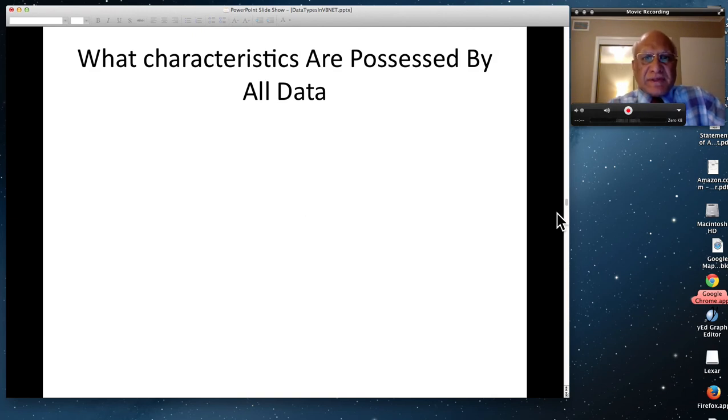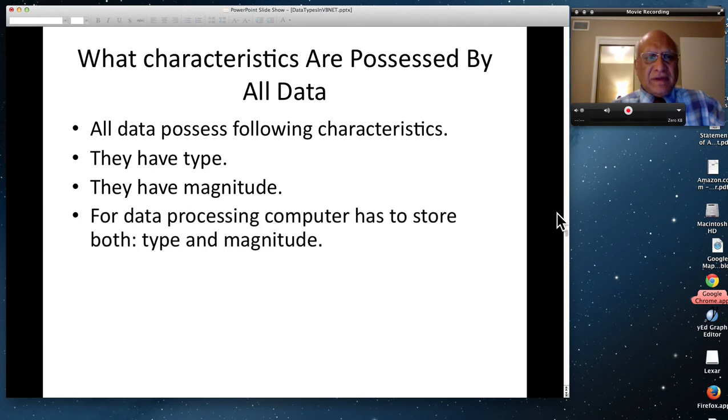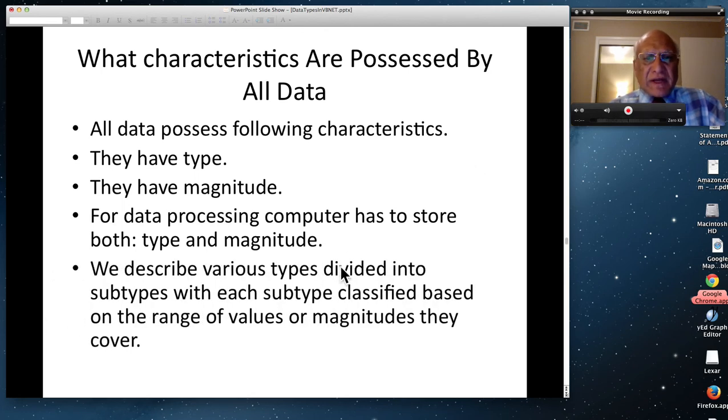What are the characteristics that are possessed by all data? All data possess following characteristics. They all have a type. Whether you think about it consciously or not, they all have a type. And they all have magnitude. For data processing computer has to store both the type and the magnitude. Every raw data has type and magnitude. And we are going to describe various types divided into subtypes with each subtype classified based on the range of value or magnitude they can cover.